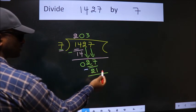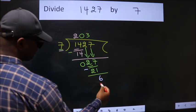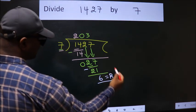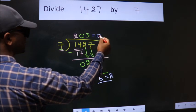No more numbers to bring it down. So, we stop here. This is our remainder. This is our quotient.